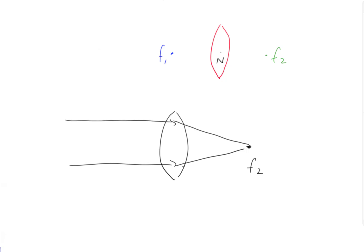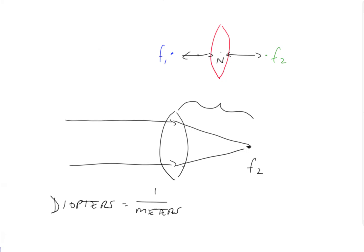So how do we find the power — how do we assign a number? The power of the lens is in diopters, and diopters equals one over the distance in meters. The distance from f1 to the nodal point and from f2 to the nodal point are the same. So if f2 is two meters away from the nodal point, the power equals one over two meters, which is half a diopter.